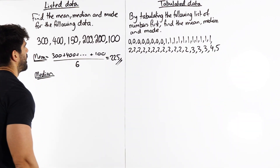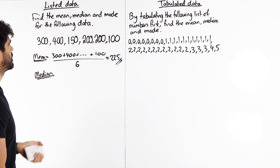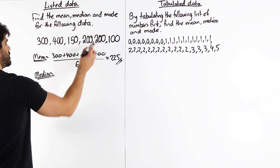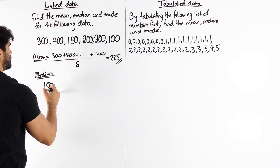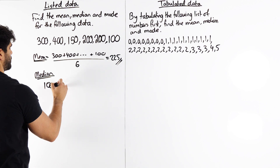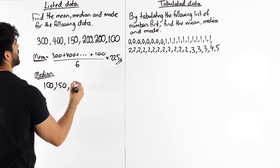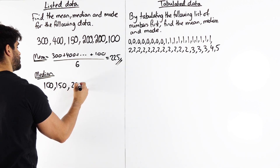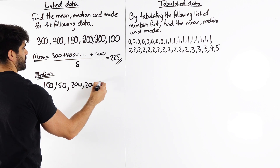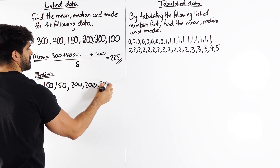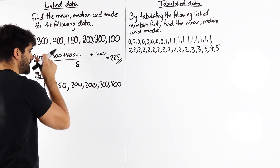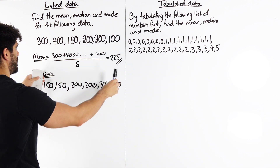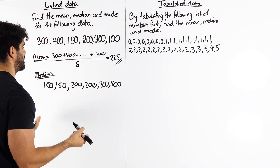So the first thing we need to do is put everything in order. We have 100, 150, two 200s, 300, and 400. Now in this situation, doing it step by step is very easy, but if I give you 20 pieces of data, it's very long to just cross off from either end.